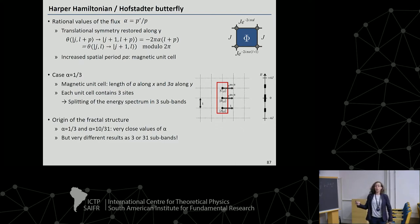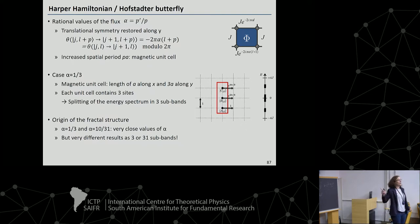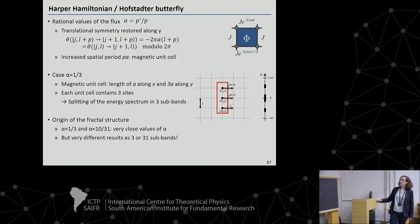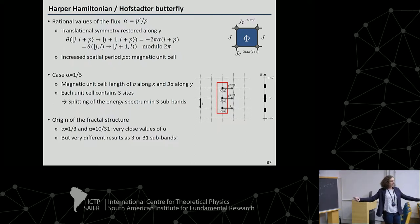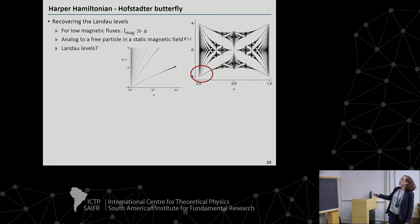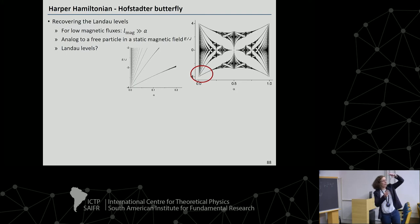The origin of the fractal structure is simple to understand. If you have two rational numbers which are very close to each other, like one-third and 10 over 31 — basically the same for an experimentalist — here you just have to hop three times but there you have to hop 31 times. Your magnetic cell is very different, and that's why you get this kind of structure. If you zoom in, you will see that these are basically the splittings of these bands, with a very different number of subbands which are close together.